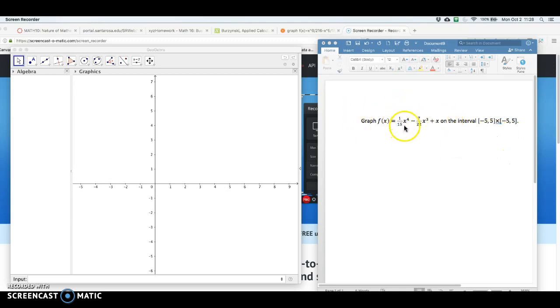So I'm going to graph this function right here, 1/15 x to the 4th minus 7/20 x cubed plus x, on the interval x going from minus 5 to 5 and y here going minus 5 to 5.